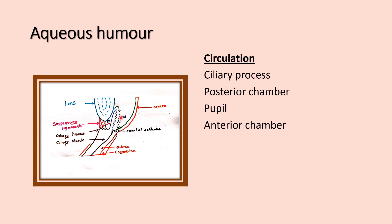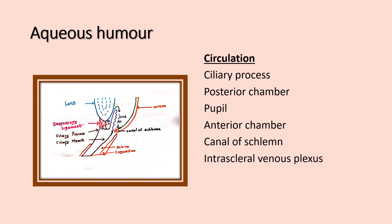From the anterior chamber, it reaches the Canal of Schlemm. The Canal of Schlemm is located at the corneoscleral junction. Then it drains into the intrascleral venous plexus and into the anterior ciliary vein. So the flow is: ciliary process → posterior chamber → anterior chamber through the pupil → Canal of Schlemm → intrascleral venous plexus → anterior ciliary vein.